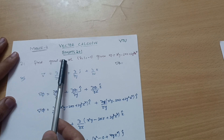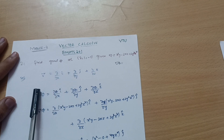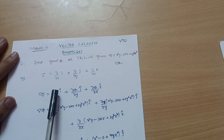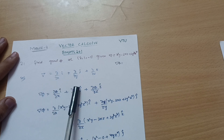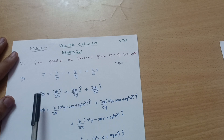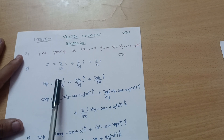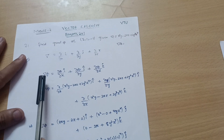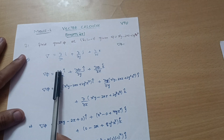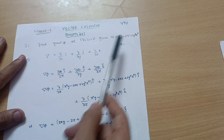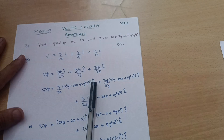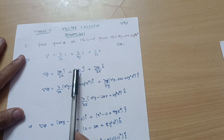We have to calculate the gradient of φ, so del φ equals (∂φ/∂x)i + (∂φ/∂y)j + (∂φ/∂z)k. This is your gradient of φ. We have to calculate this where φ is given. So del φ = ∂/∂x of (x²y - 2xz + 2y²z⁴) multiplied by i-cap, plus ∂/∂y of the same φ value.